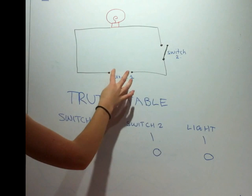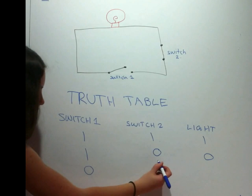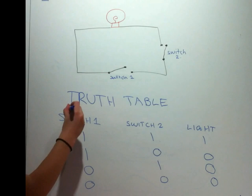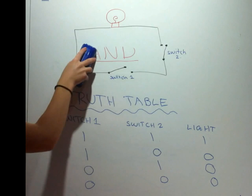Vice versa, if we turn off the first switch and we turn on the second switch, then the lightbulb will be switched off. Also, if we turn off both switch one and switch two, then the lightbulb will be turned off. This is how the logical AND operator behaves. It can be drawn as such.